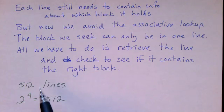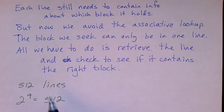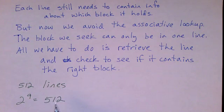So we're going to look at a cache with 512 lines, as an example. And note that 2 to the 9th is 512. So we can address any line in the block with a 9-bit number.